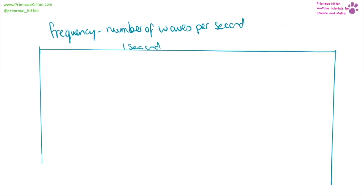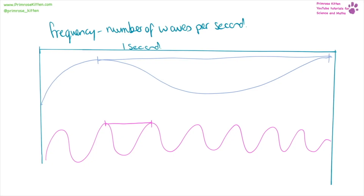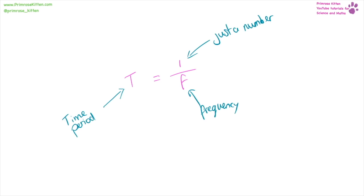Frequency is the number of waves per second. Something with a low frequency will have few peaks visible in one second, but something with high frequency will have many peaks in one second. High frequency corresponds to short wavelength, and low frequency corresponds to long wavelength. If we want to measure the time period, that is one over the frequency. Time period is measured in seconds and frequency in hertz — note it is a capital H and a lowercase z; do not write both lowercase or both uppercase.